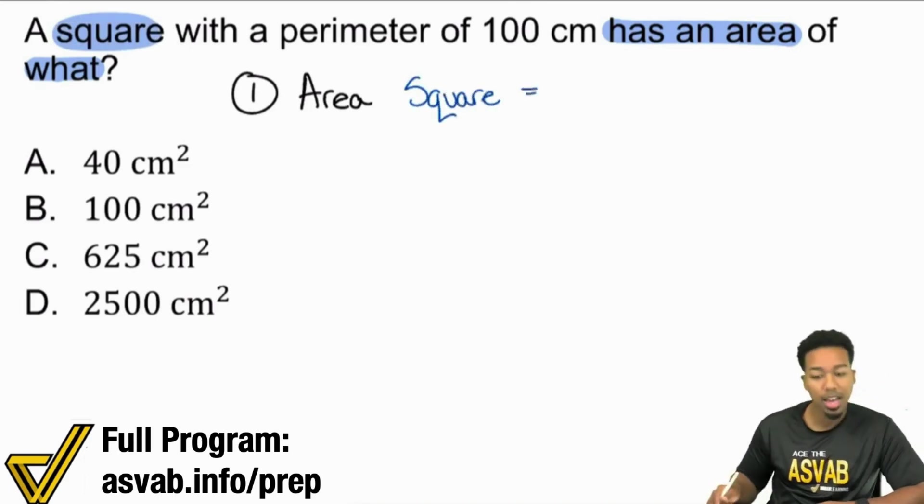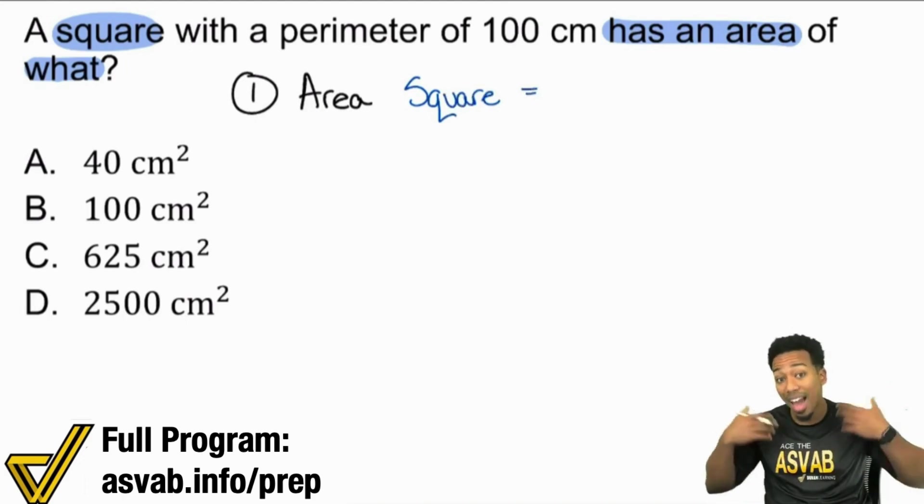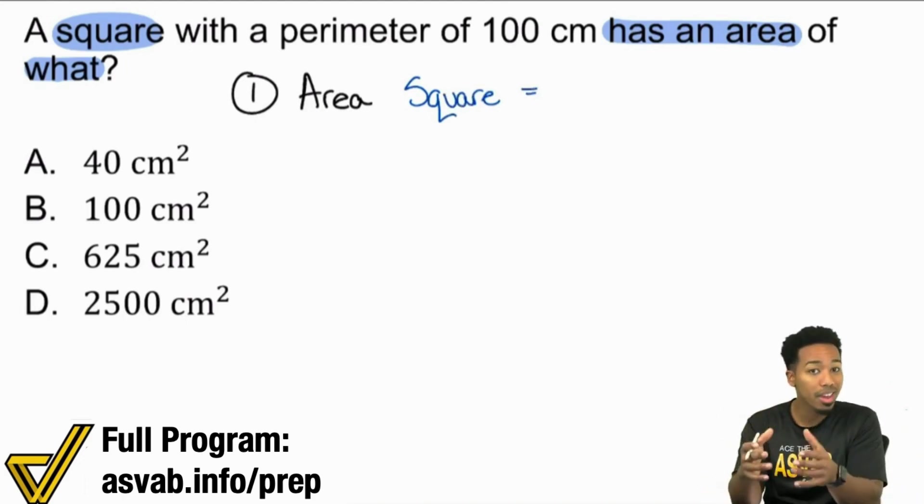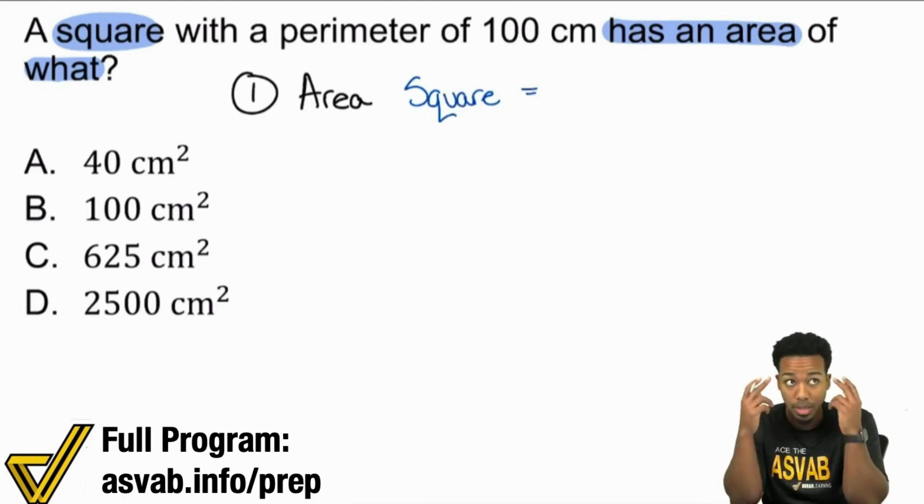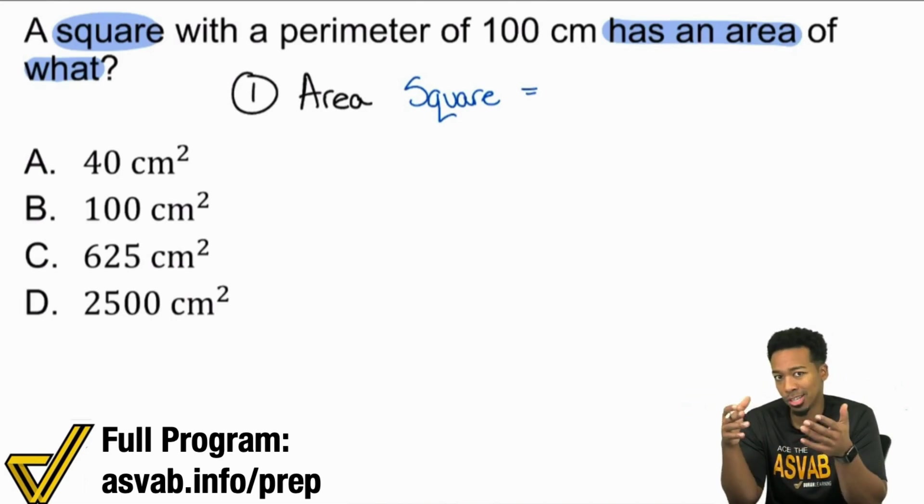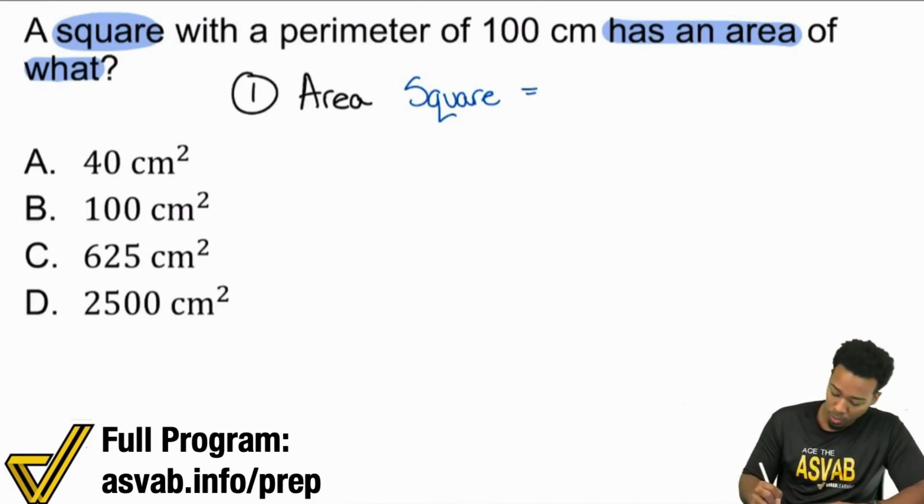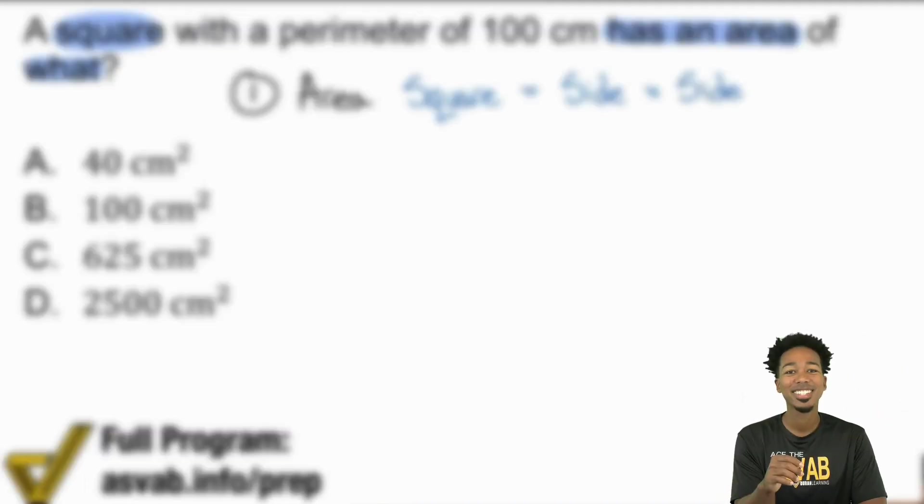And the one thing that we know, the one thing that we have to know is that if we want the area of a square, think about your formulas. The formula for a rectangle is length times width. A square is a rectangle. It's the same stuff. It's just all the sides are the same. So the area of a square is side times side.